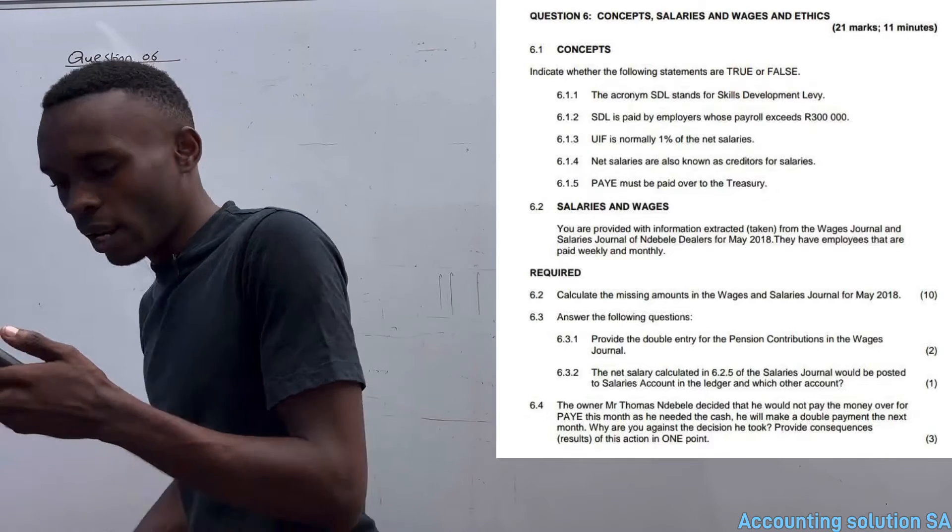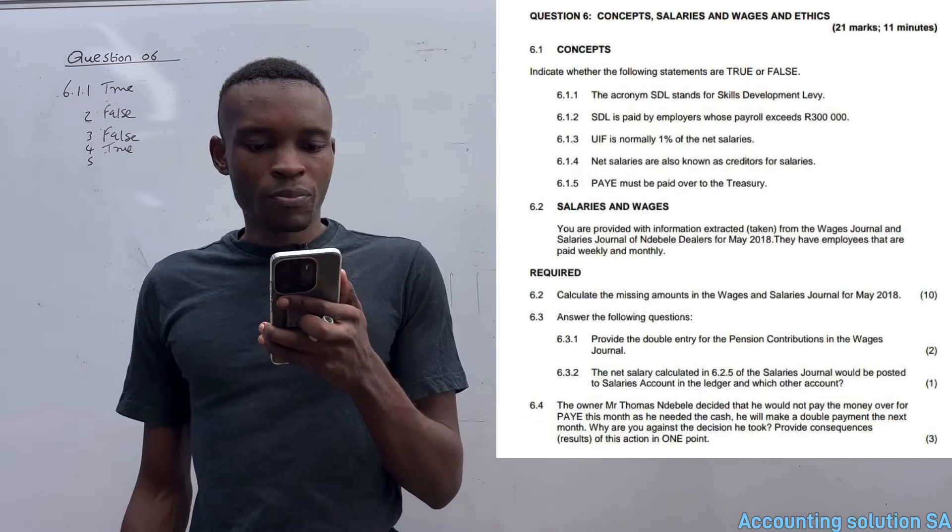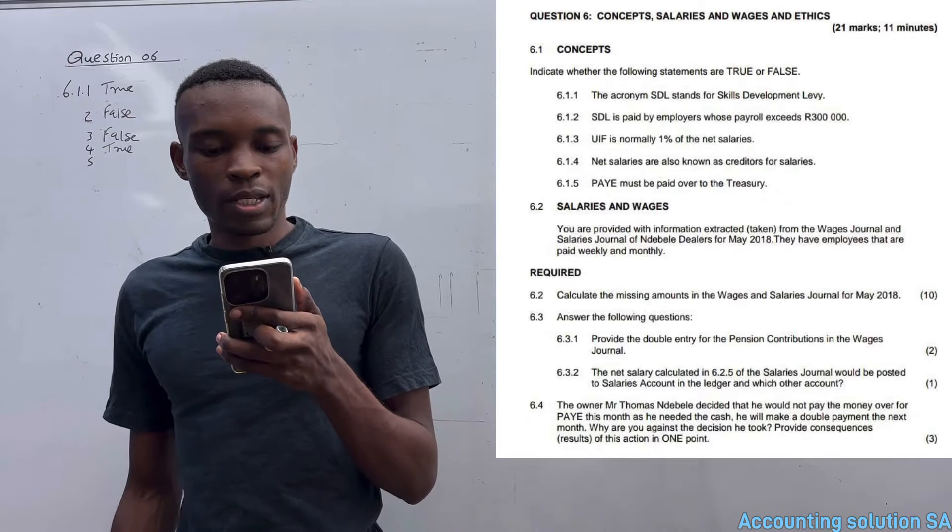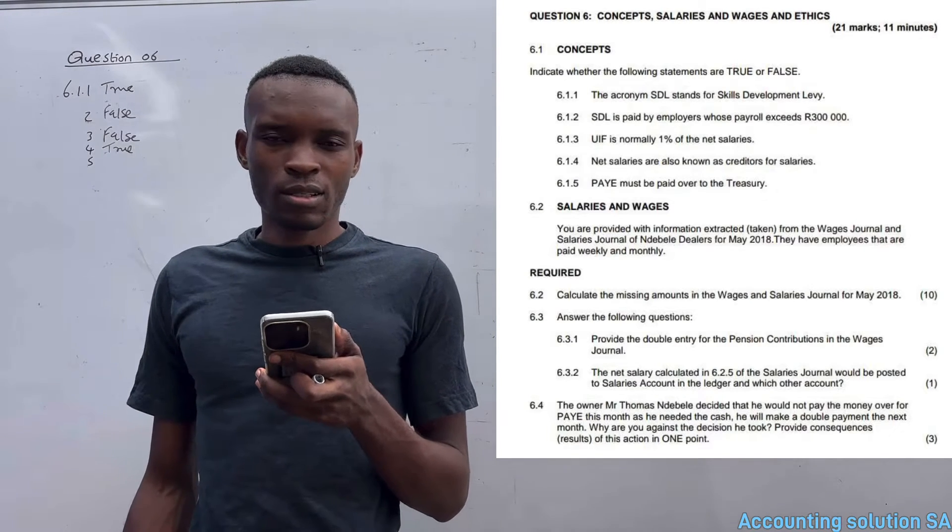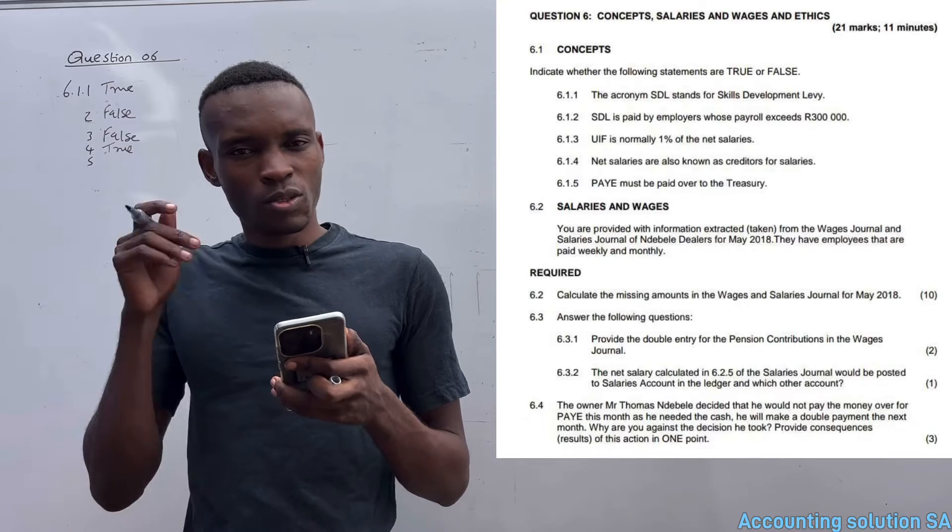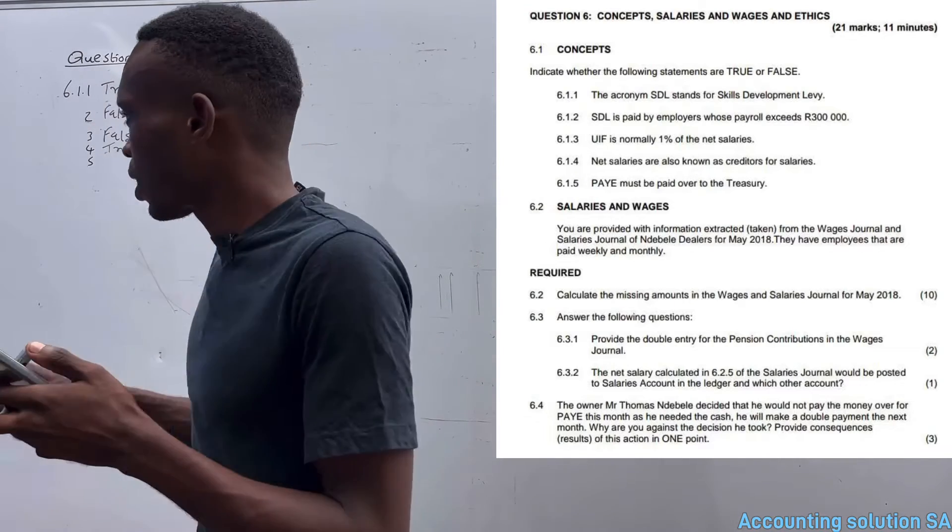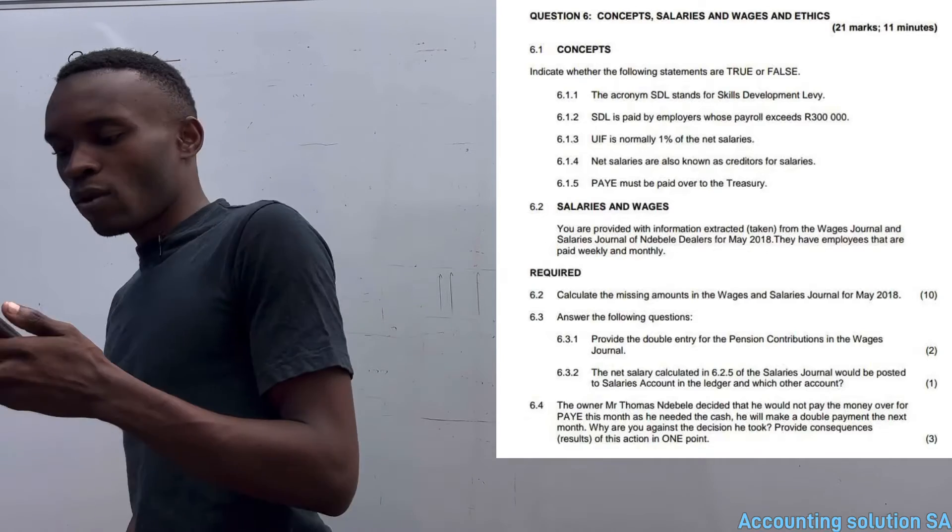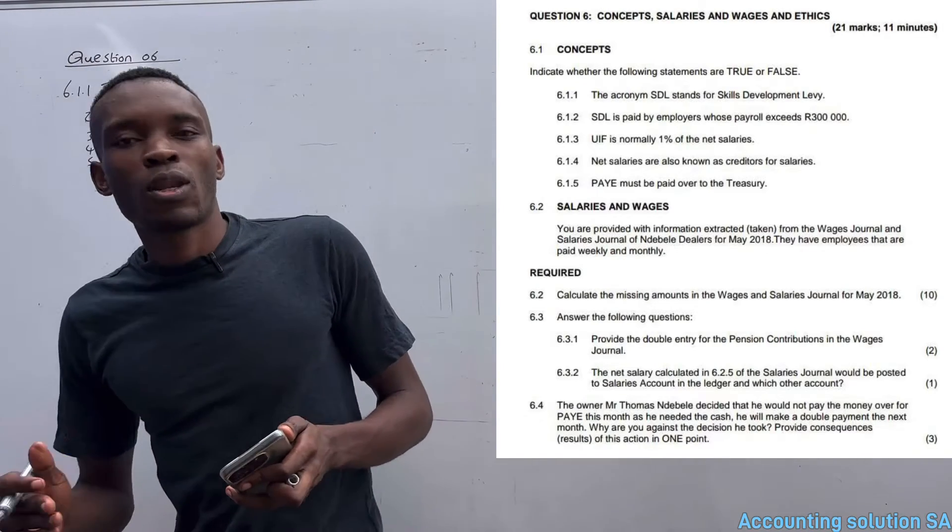The next one - PAYE must be paid over to the Treasury. Is it true? No, it's paid to SARS, not to Treasury, which means that the answer is false. When a business collects PAYE from employees, they must pay it to SARS, not to Treasury.